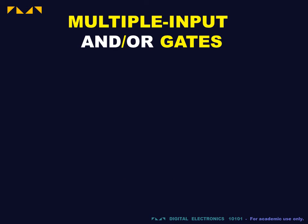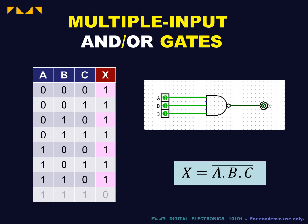For the AND and OR gates and their inverses, it is possible to have multiple input gates that perform an analogous function. Thus, the output of the 3-input NAND gate is false if and only if all 3 inputs are true.